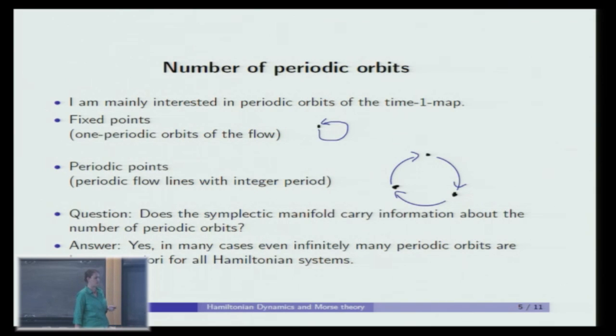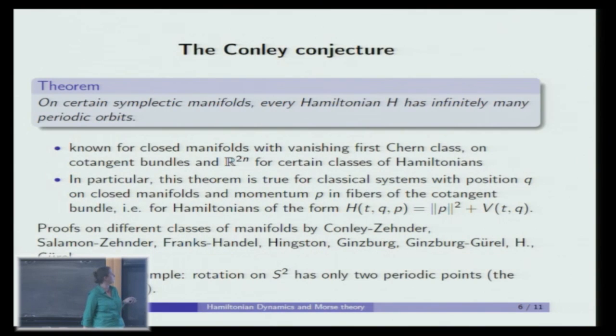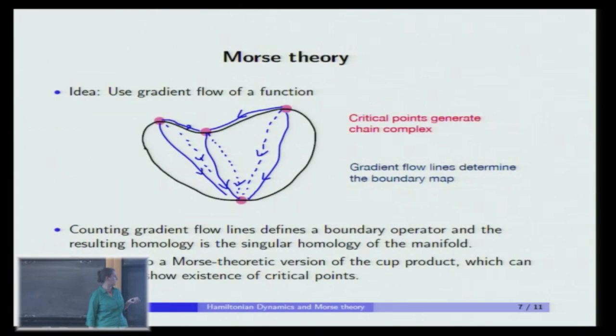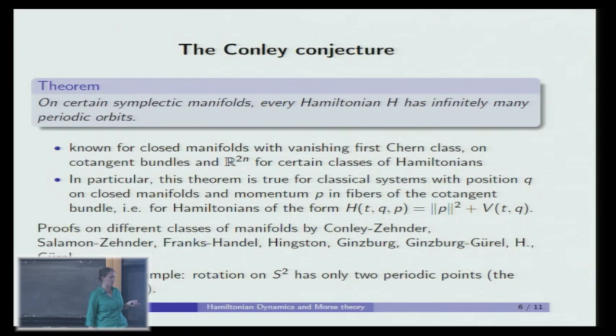And the question I want to ask is: does the symplectic manifold tell me anything about the number of periodic orbits? And in general, we can figure out lots of things—not completely what's going on, but in many cases we know that there are even infinitely many periodic orbits for all Hamiltonian systems on some symplectic manifolds, which was known as the Conley conjecture. I stated now as a theorem; it's known in many cases. As my thesis work, we get the results on closed symplectic manifolds with vanishing first Chern class and for certain classes of Hamiltonians on cotangent bundles of closed manifolds.